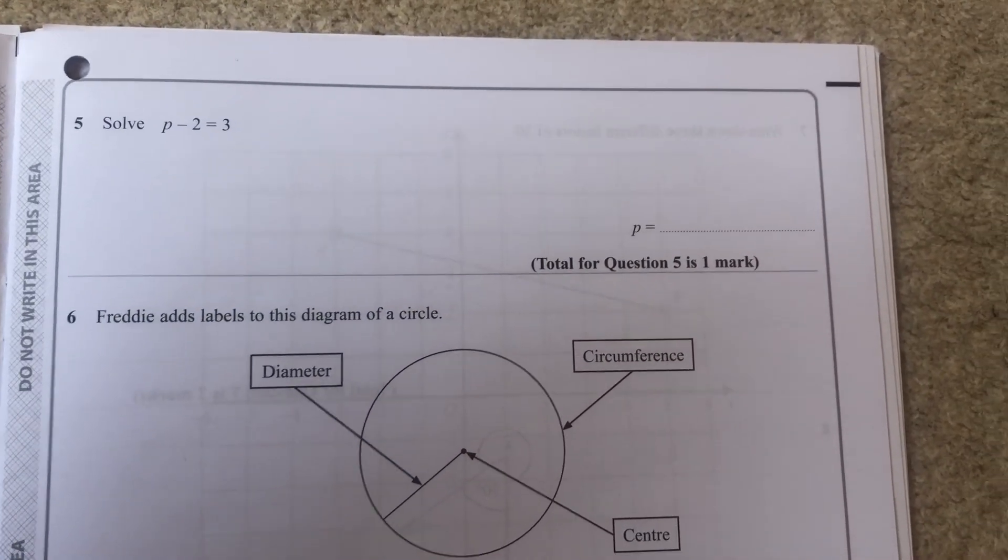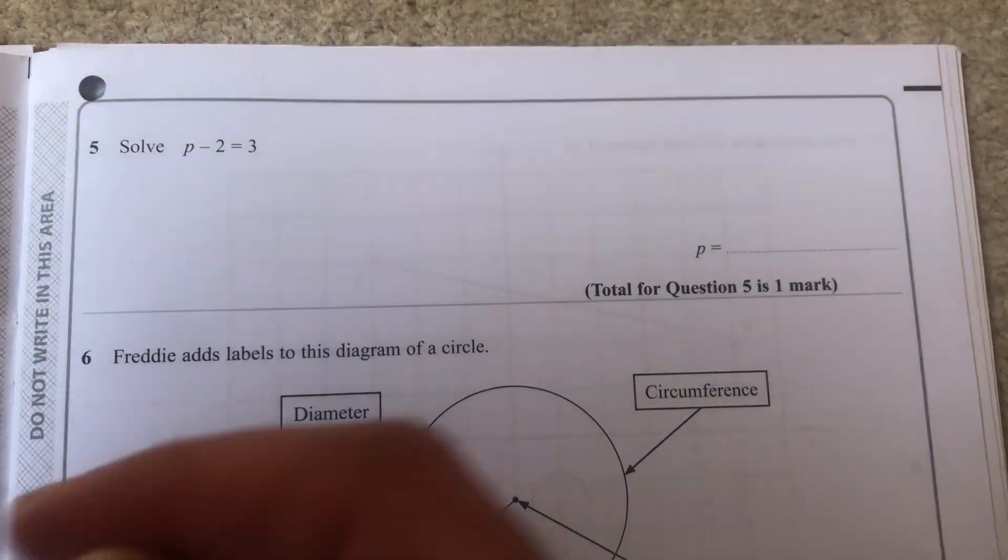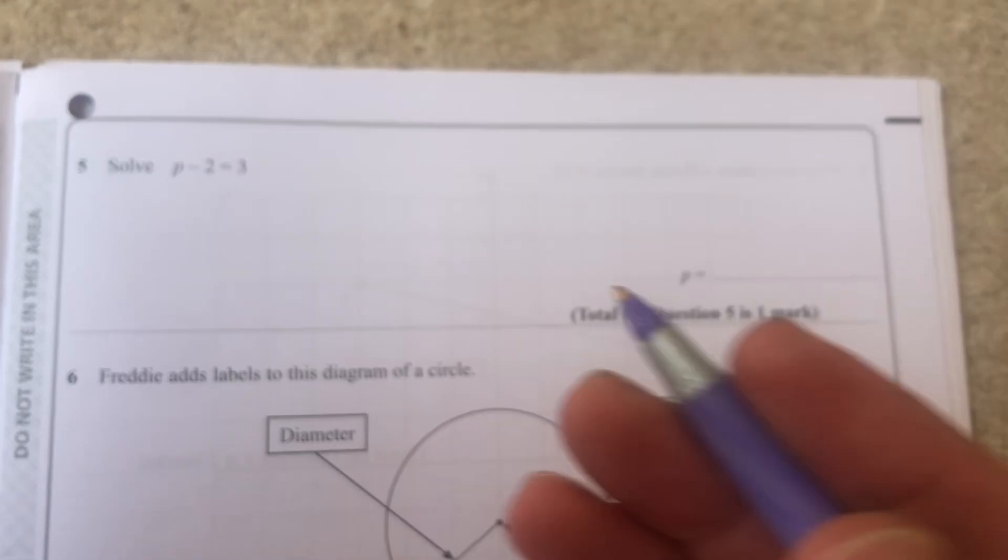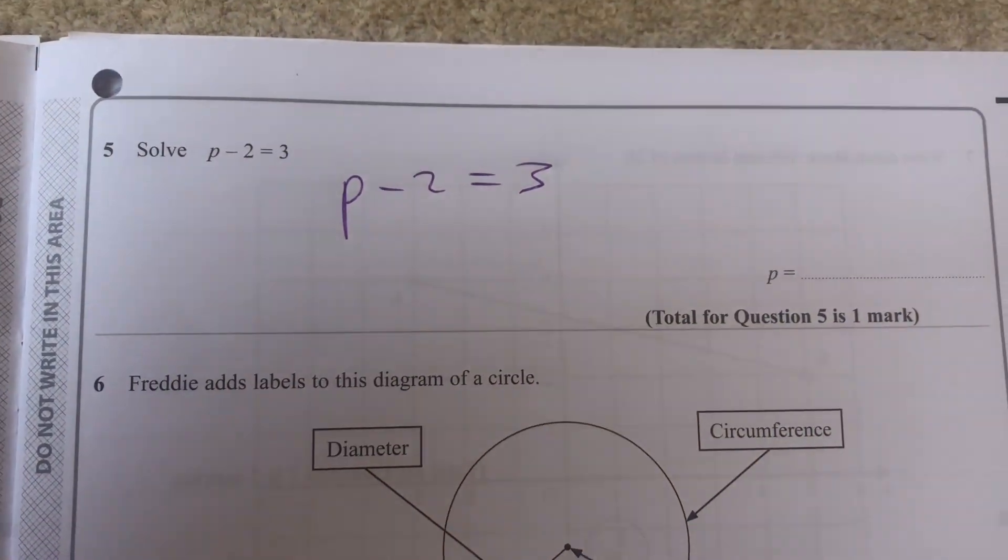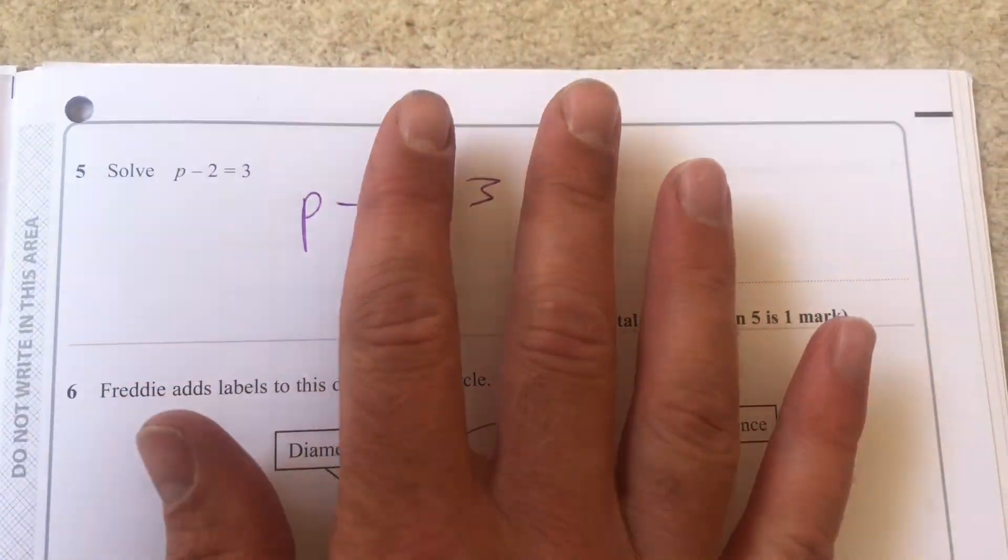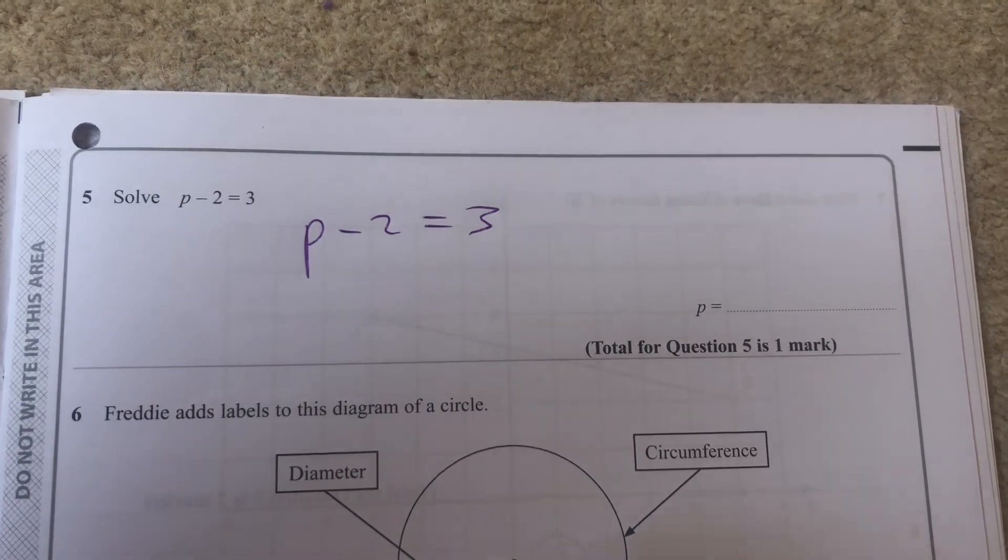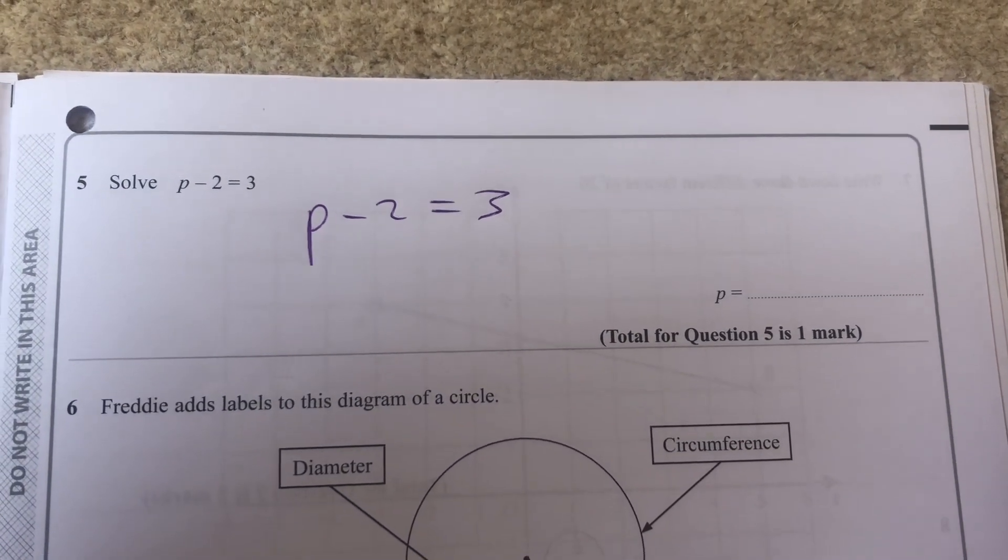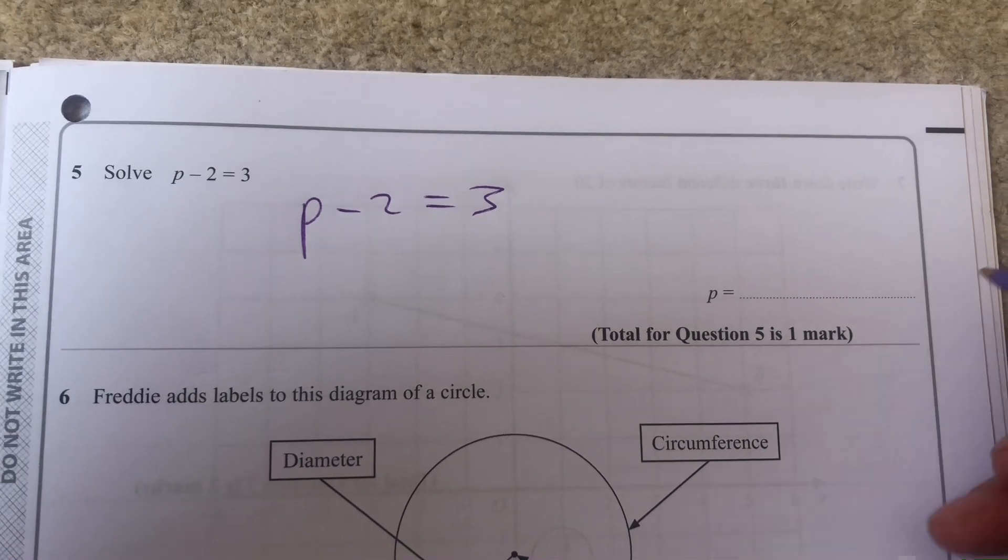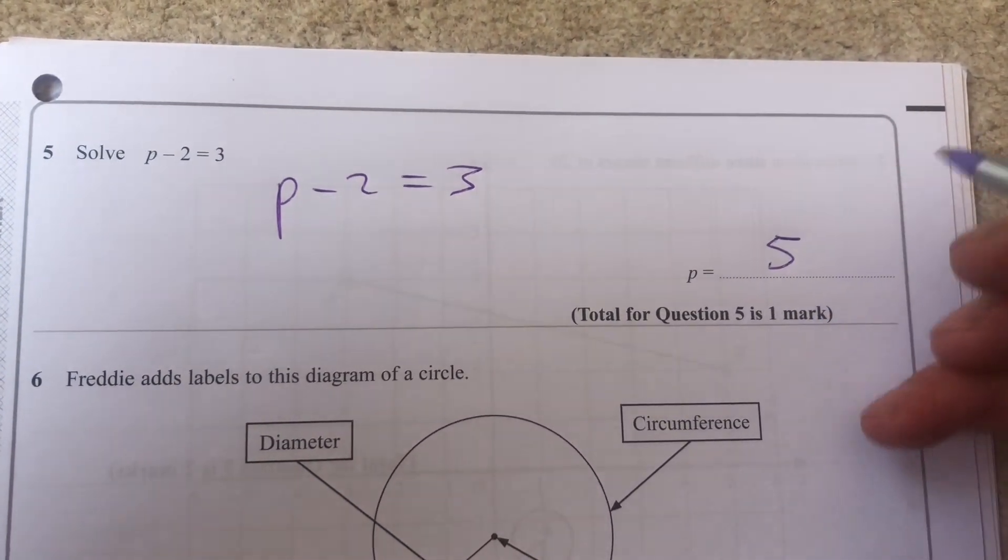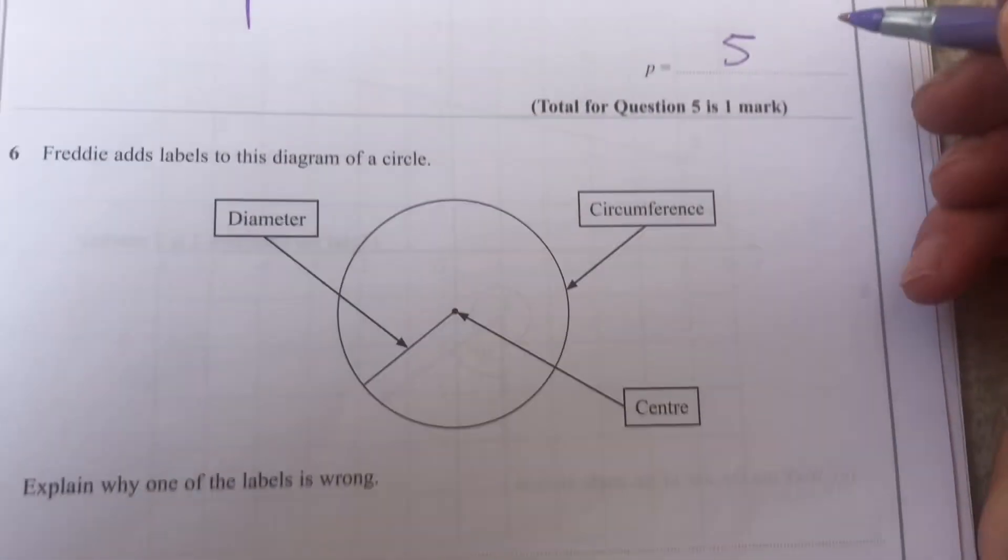Trying to go for a mark a minute, but in the early part of the paper we should be able to do quite a lot. Solve p - 2 = 3. We can use the balance method, but sometimes just think about it with numbers: what takeaway 2 equals 3? Well, 5 - 2 = 3, so p = 5. You can add 2 to both sides using the balance method, or just turn it into plain English. Checking: 5 - 2 = 3, correct.